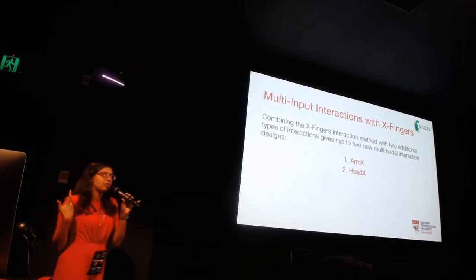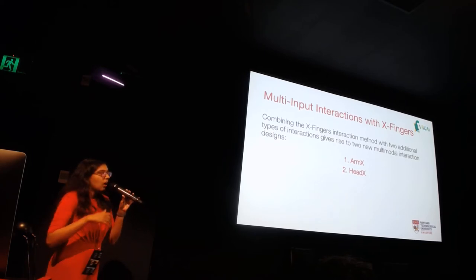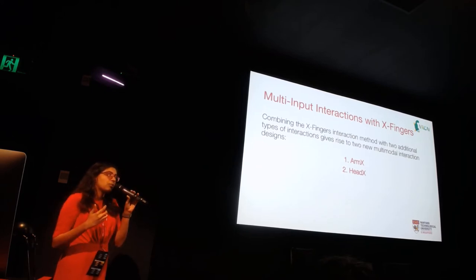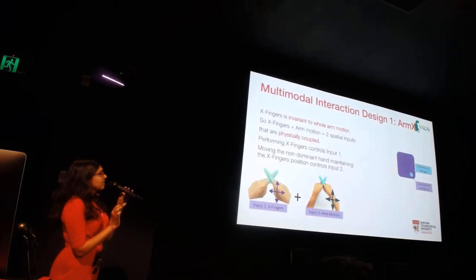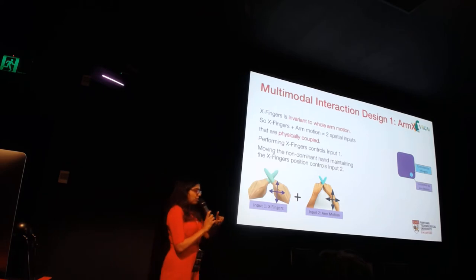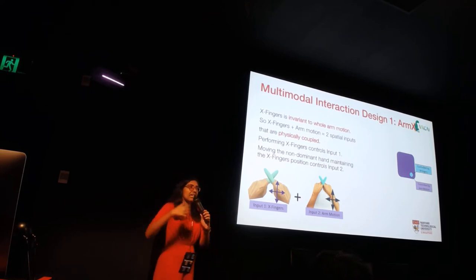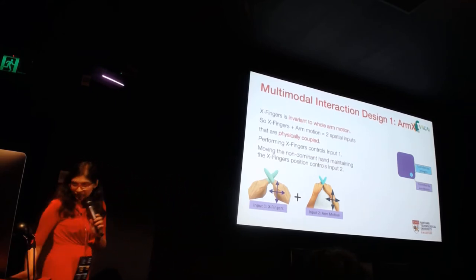We did a couple of experiments to verify this as well. Based on this, we suggest two new multimodal interaction methods which provide multiple spatial inputs. The first one is called AMIX. AMIX is based on the concept that you can move your hand about and still not affect the position of X fingers, so you can use your hand as a secondary input method.